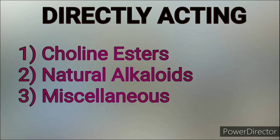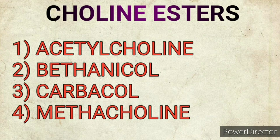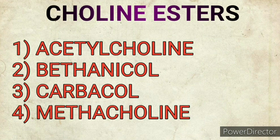In choline esters there are mainly four drugs. First is acetylcholine, which acts on both nicotinic and muscarinic receptors and is also an ultra-short-acting drug. Second is bethanechol, which is M3-specific and acts on smooth muscles causing contraction. Third is carbachol, which acts on both nicotinic and muscarinic receptors and is the longest-acting drug. Fourth is methacholine, which is mainly M2-specific.